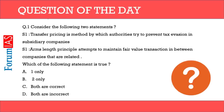Consider the following two statements. First: transfer pricing is a method by which the authority tried to prevent tax evasion in subsidiary companies. Second: the Arms Length Principle attempts to maintain fair value transactions between companies that are related. See both statements and tell me if they are correct or not — we will answer at the end of the video.